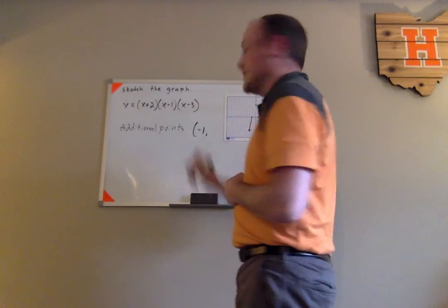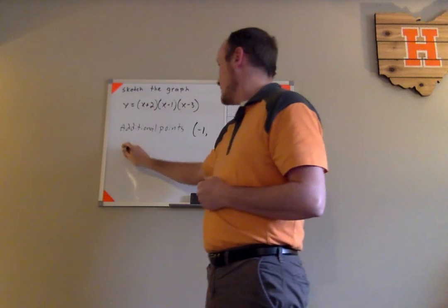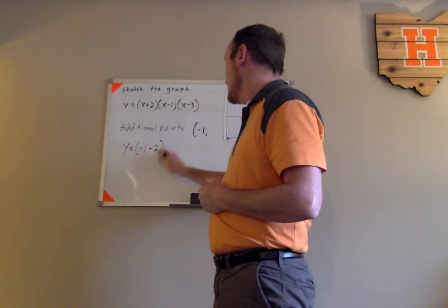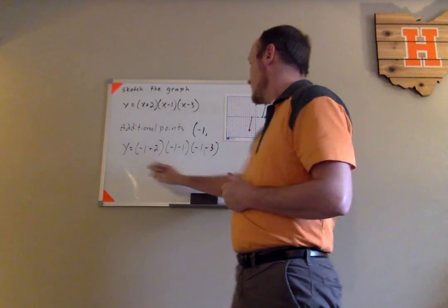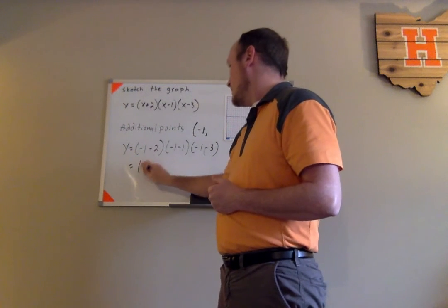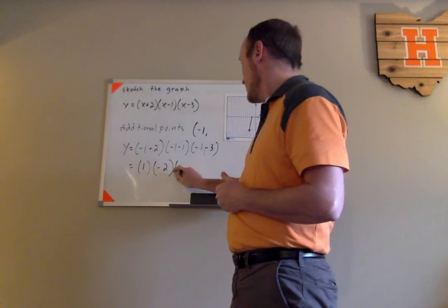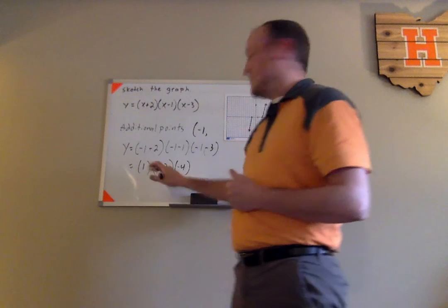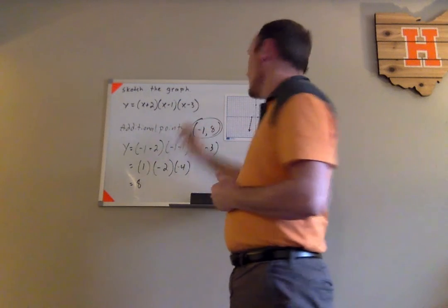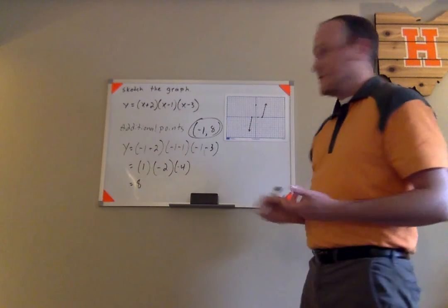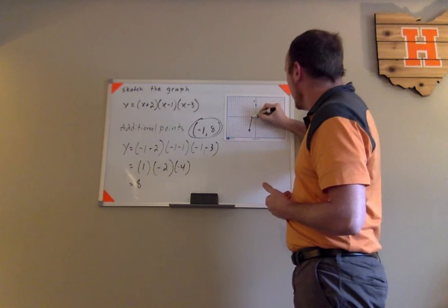Let's figure out the y-coordinate at x equals negative one. Plugging in: negative one plus two is one, negative one minus one is negative two, and negative one minus three is negative four. One times negative two is negative two, and negative two times negative four is positive eight. So the point (−1, 8) is on this graph. I'll add that point — going over to negative one and up to eight. That helps me be a little more accurate.